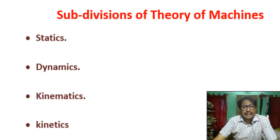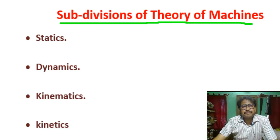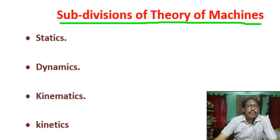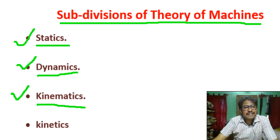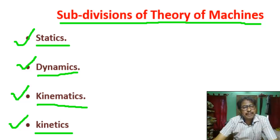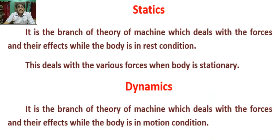Now, the classification or subdivision of Theory of Machine. Number one: Statics. Number two: Dynamics. Number three: Kinematics. Number four: Kinetics. Let's go through each definition in detail.